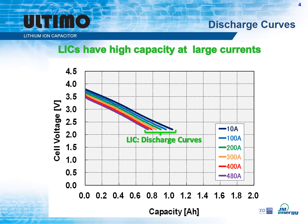LIC cells are charged to 3.8 volts, or 100% state of charge, and fully discharged to 2.2 volts, which is 0% state of charge. LIC cell voltage declines linearly as it discharges. As the discharge current increases, the usable capacity is slightly reduced, resulting in additional parallel discharge lines.